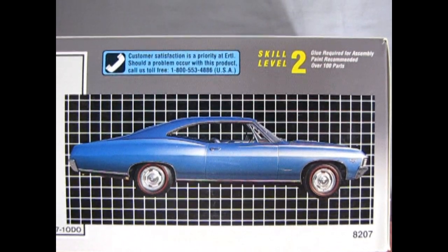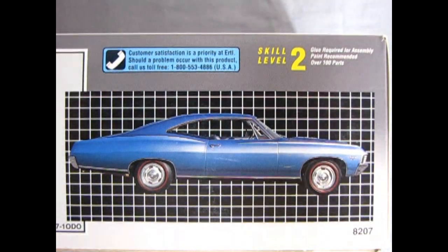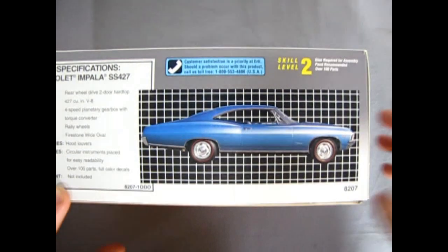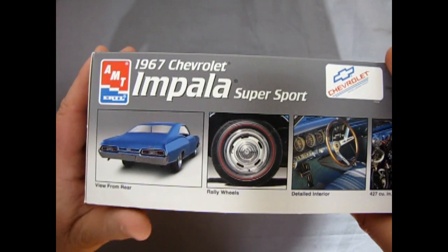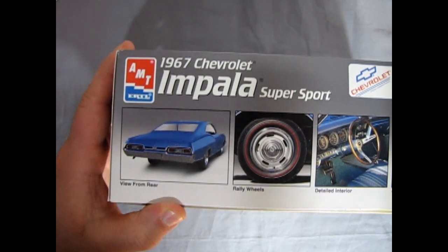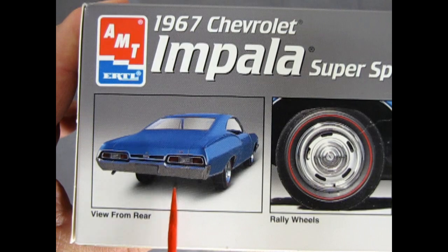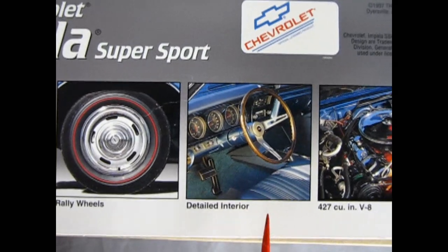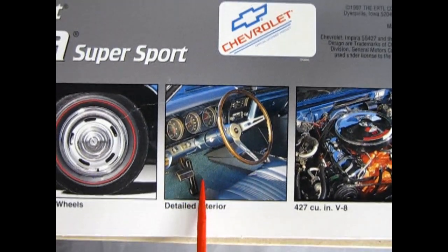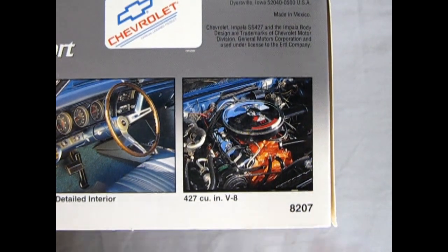And here we've got a picture of the real car on the side of the box. Should you need any assistance, there's the old number for customer service. I don't know if it's gonna help you anymore. Since AMT is now part of round two, there's the side of the box. And then here we actually get some real pictures of the real car. There's the view from the rear, the rally wheels with the red line tires in there. Red wall tires I guess. The detailed interior and the real 427 cubic inch V8 painted in Chevrolet engine red or orange.